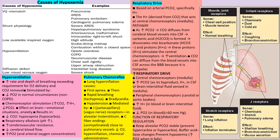The Haldane effect states that whichever gas has more partial pressure, hemoglobin will bind to that gas. Oxygen content is the total amount of oxygen carried in the blood. Anemia affects oxygen content but not the partial pressure of oxygen. One gram of hemoglobin carries around 1.34 ml of oxygen. The majority of oxygen is carried as oxyhemoglobin, while carbon dioxide is mainly transferred as bicarbonate ions in the serum; a small portion is bound to hemoglobin as carbaminohemoglobin, and some is directly dissolved in blood.